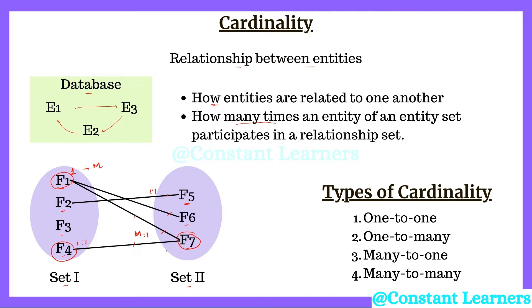Cardinality defines how entities in set one are related to the entities in set two. Depending upon the type of relationship between the entities, we get four types of cardinalities: one-to-one mapping, one-to-many, many-to-one, and many-to-many. In this video, we will only discuss the first type — one-to-one mapping.